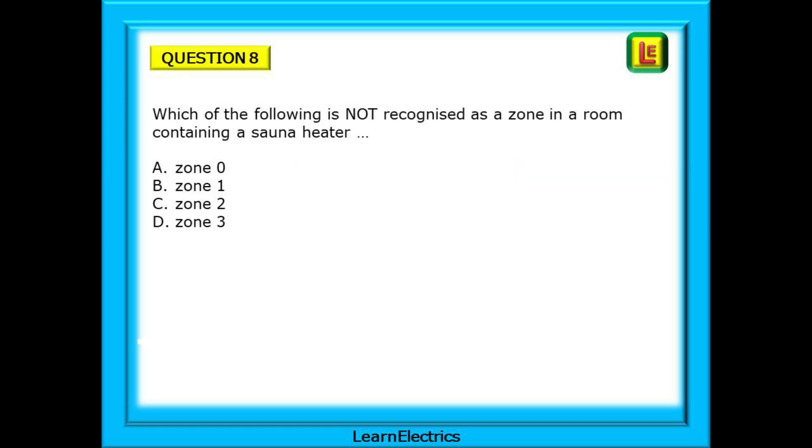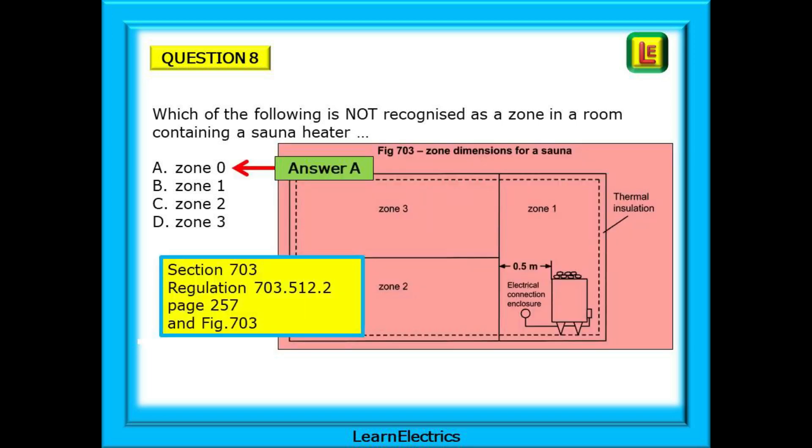This brings us to question number 8: Which of the following is not recognised as a zone in a room containing a sauna heater? You should be getting used to spotting the clues by now. Page 3 tells us the answer is in section 703, Rooms and cabins containing sauna heaters. Regulation 703.512.2 on page 257 and also figure 703 will help you with the answer. This is a 'not' question and zones 1, 2 and 3 are shown but zone 0 is not there. The answer is A, Zone 0. Easy if you follow a logical method.